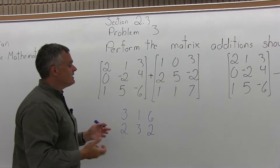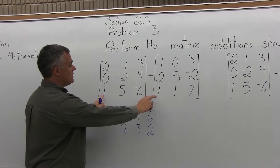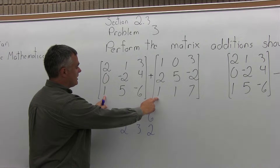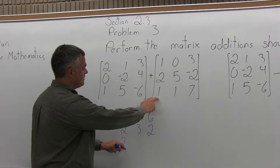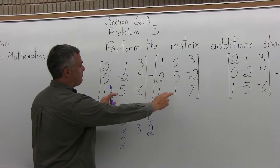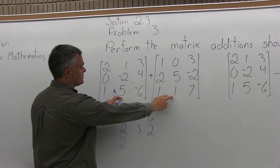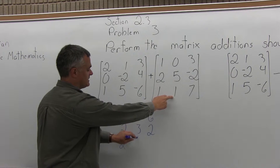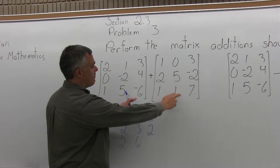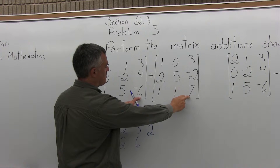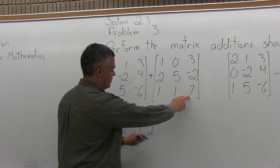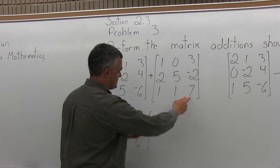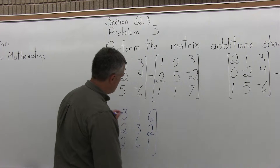And then coming across the bottom, bottom left plus bottom left, 1 plus 1 is 2. And then bottom center plus bottom center is 5 plus 1, which is 6. And then bottom right plus bottom right, negative 6 plus 7 would be positive 1. And that's the answer.